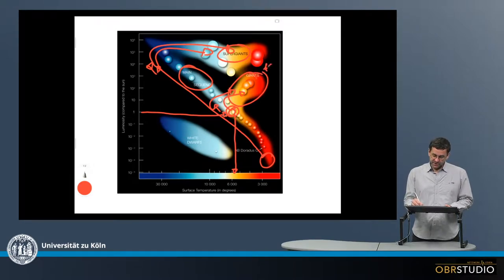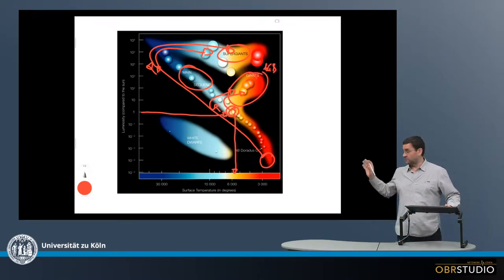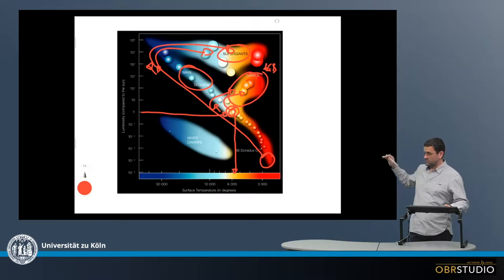And importantly, here are also the AGB stars. They are quite important as we think that quite some of the pre-solar grains might come from these.